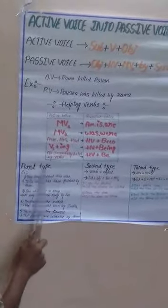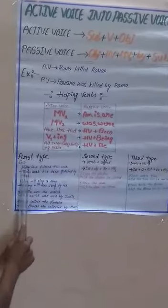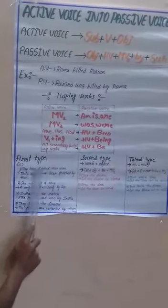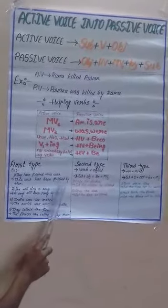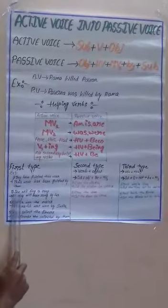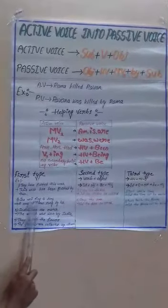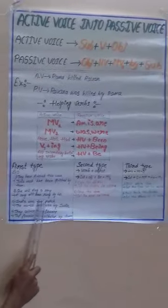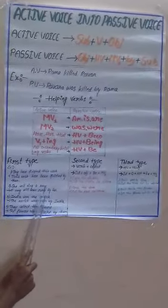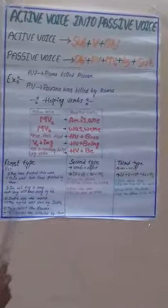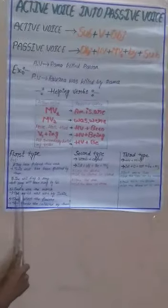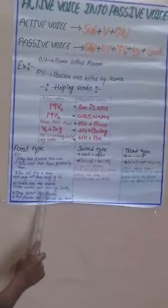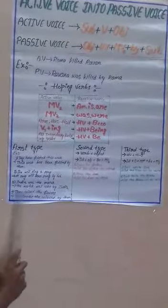In Active into Passive, there are three types. First type — example: They have finished their work. Passive: Their work has been finished by them. Second one: She will sing a song. Passive: A song will be sung by her. Third one: India won the match. Passive: The match was won by India.